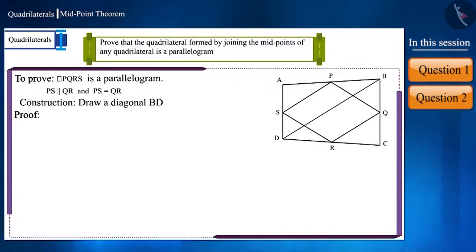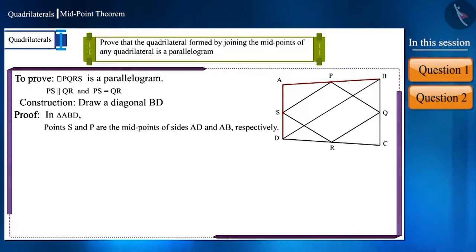We have two triangles. In triangle ABD, points S and P are the midpoints of sides AD and AB respectively. Hence, PS and BD are parallel and PS is half the length of side BD.